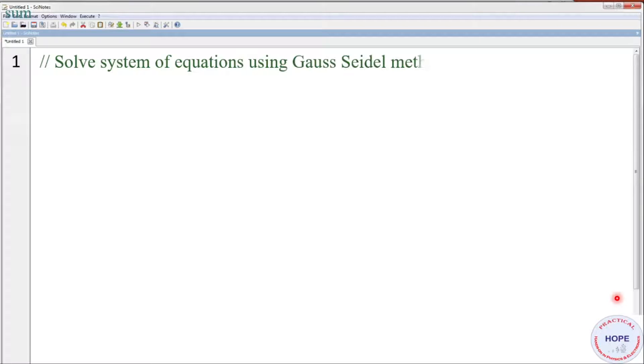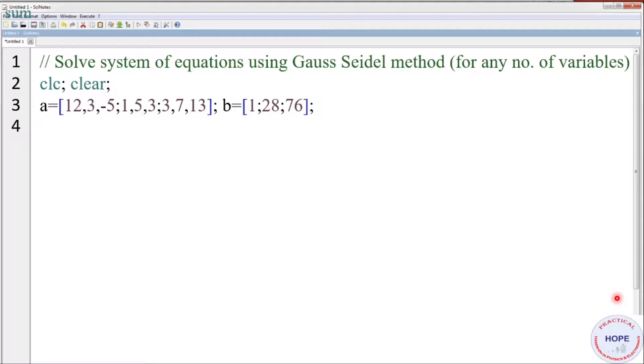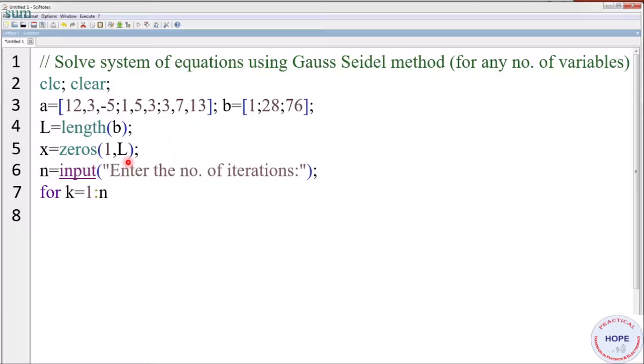Say we write a title solve system of equations using Gauss-Seidel method for any number of variables. CLC and clear. Then we define a and b. First we define capital L that is length of b. We have taken three variable case. So capital L will be three. Define the initial values of all x as 0. So this 0s will define a vector of one row and L columns. Define n equal to input enter the number of iterations. Then we define a for loop that will run from 1 to n that is number of iterations.